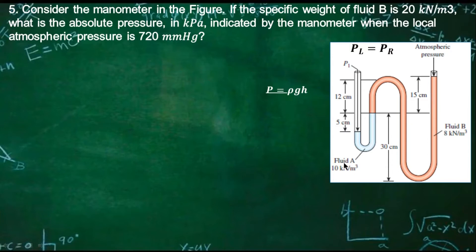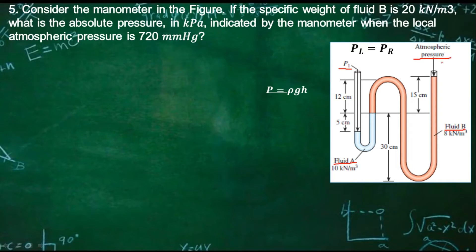We have 4 different types of exerted pressure in this system. First, P1 is our absolute pressure — what we're looking for. Second is fluid A, third is fluid B, and fourth is the atmospheric pressure. So we have four pressures in this system.